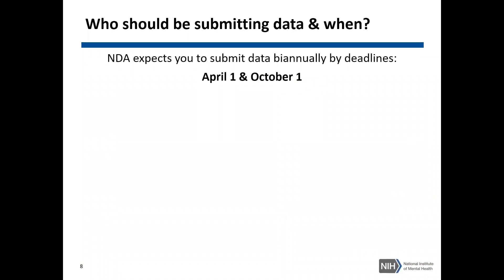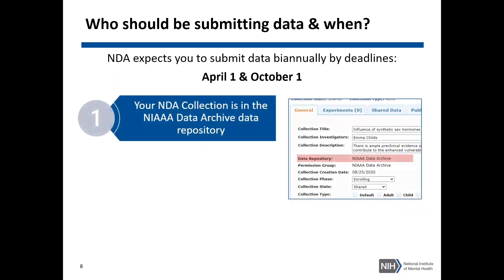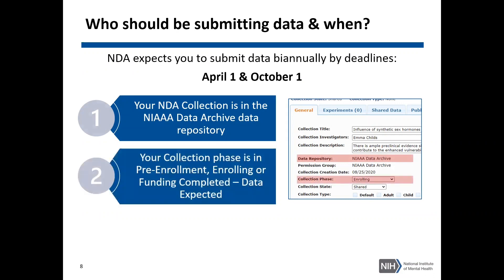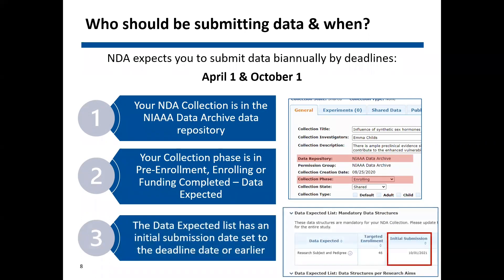NDA expects you to submit biannually by the deadlines of April 1st and October 1st if your NDA collection is in the NIAAA Data Archive data repository, your collection phase is in the pre-enrollment, enrolling, or funded completed data expected phase, and your data expected list has an initial submission date set to the deadline of April 1st or October 1st or earlier.